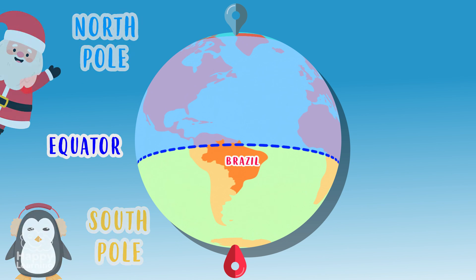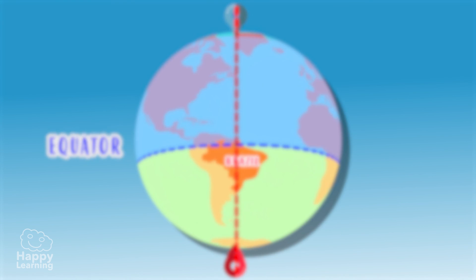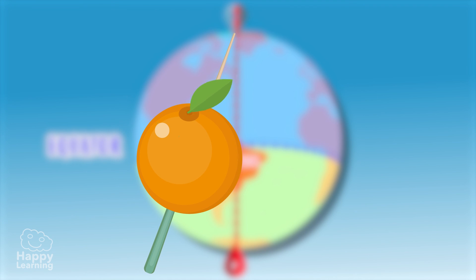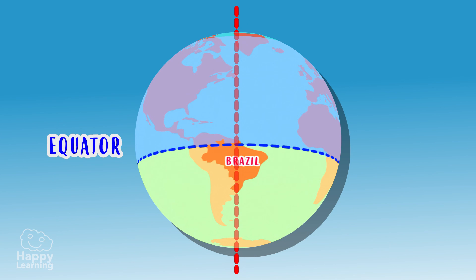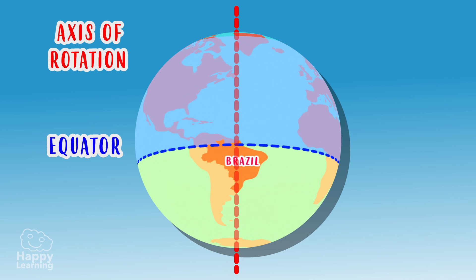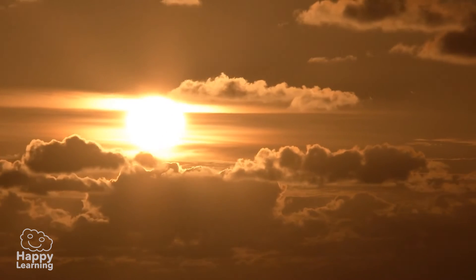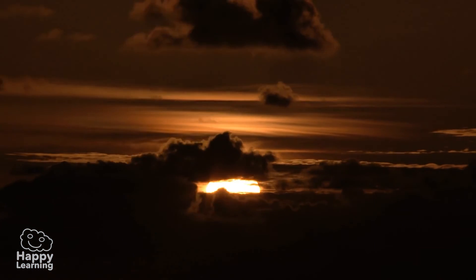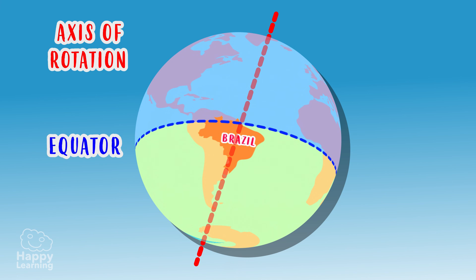In addition to the equator, we also have another imaginary line — one that joins the northern hemisphere with the southern hemisphere, passing through the center of the planet. It's as if we were going through an orange with a stick from top to bottom. This line is called the axis of rotation. The Earth rotates around this imaginary line, which causes the day and the night. And did you know that it is slightly tilted? Interesting, right?